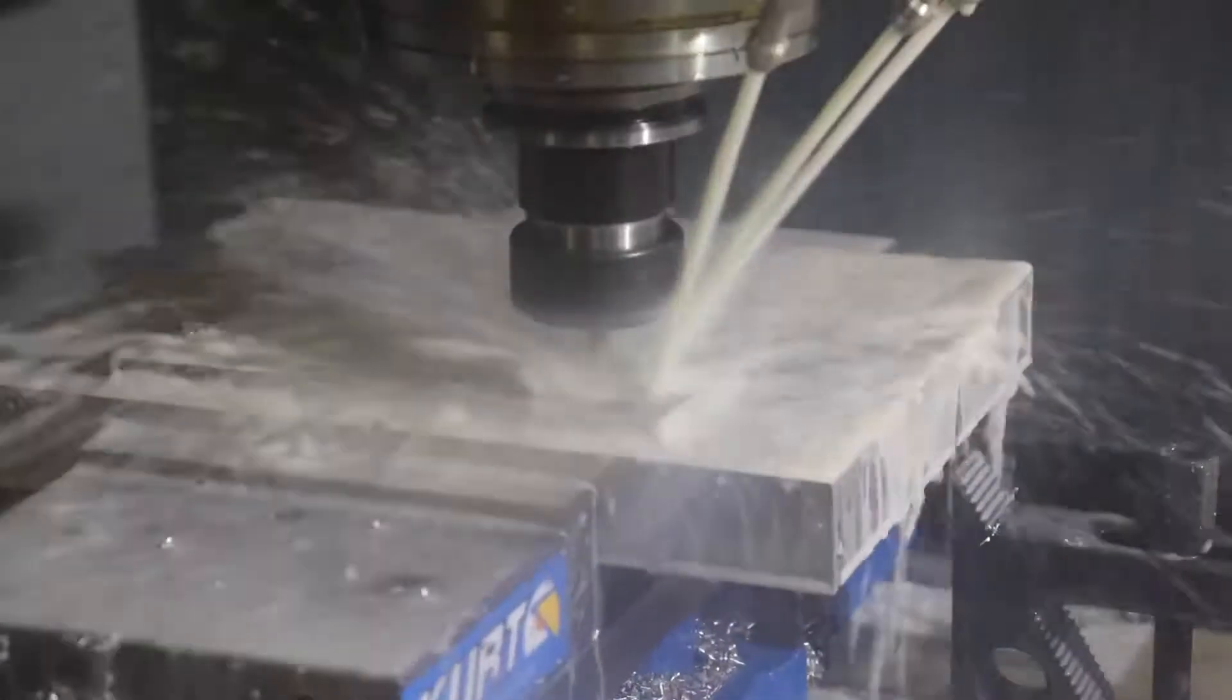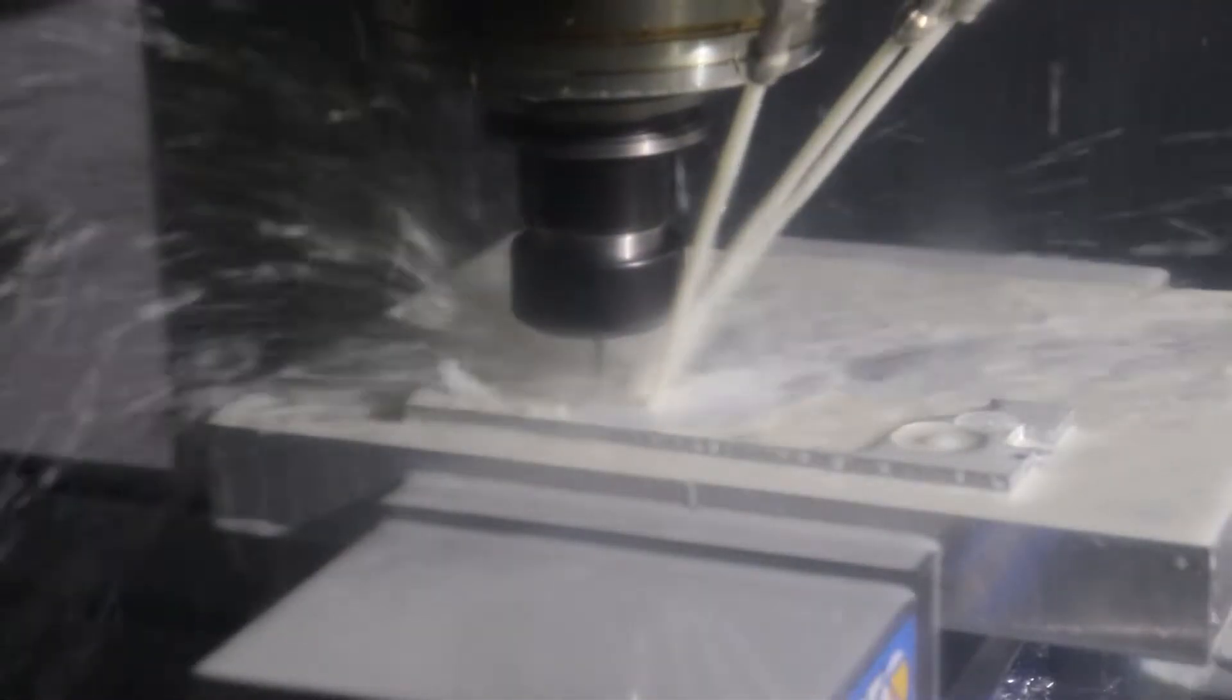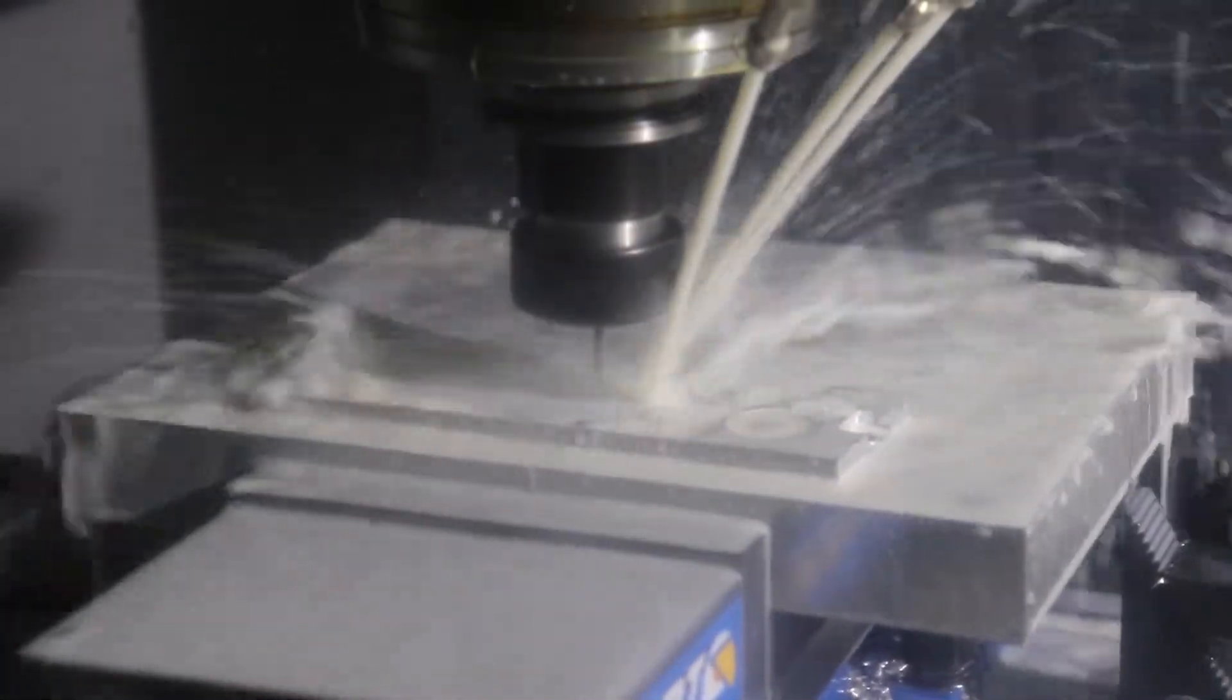For the next set of operations the smallest end mill I'll be using is 1/32nd of an inch and it doesn't stick out of the tool holder very much. So if I leave those four screws elevated on the corners I'll risk having a collision with the tool holder. So that's why those screws are removed.